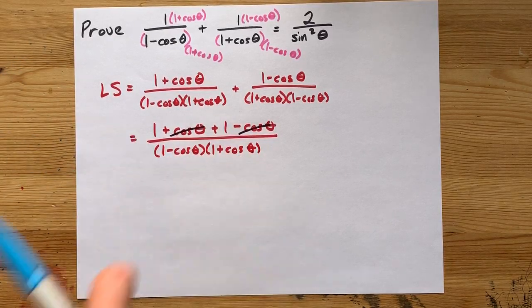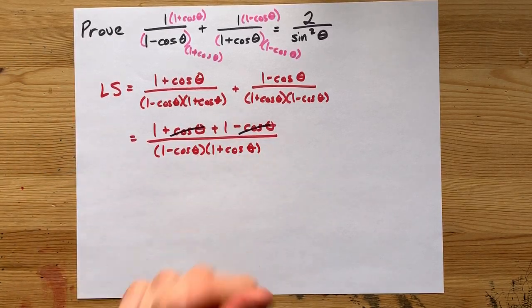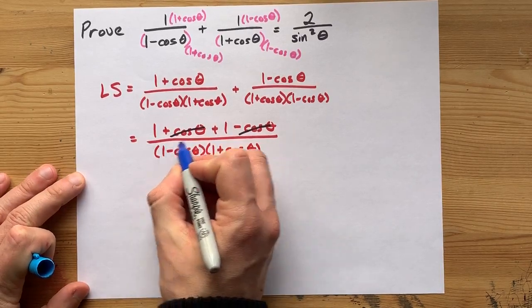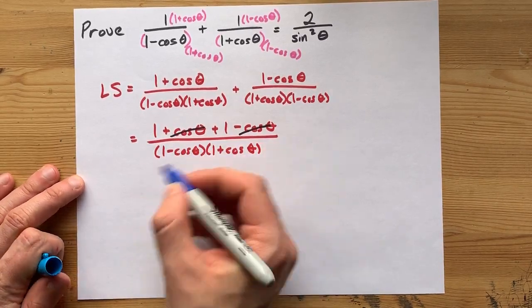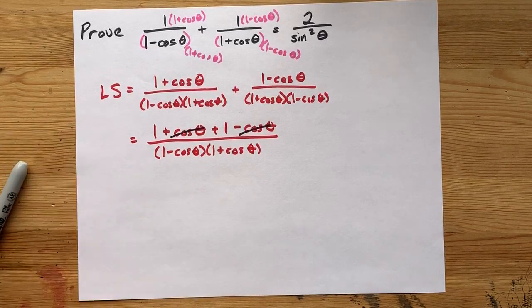This is 2 things times 2 things. We're going to have to foil it out. 1 times 1, 1 times cos, negative cos times 1, negative cos times cos. That's okay, we can do that.